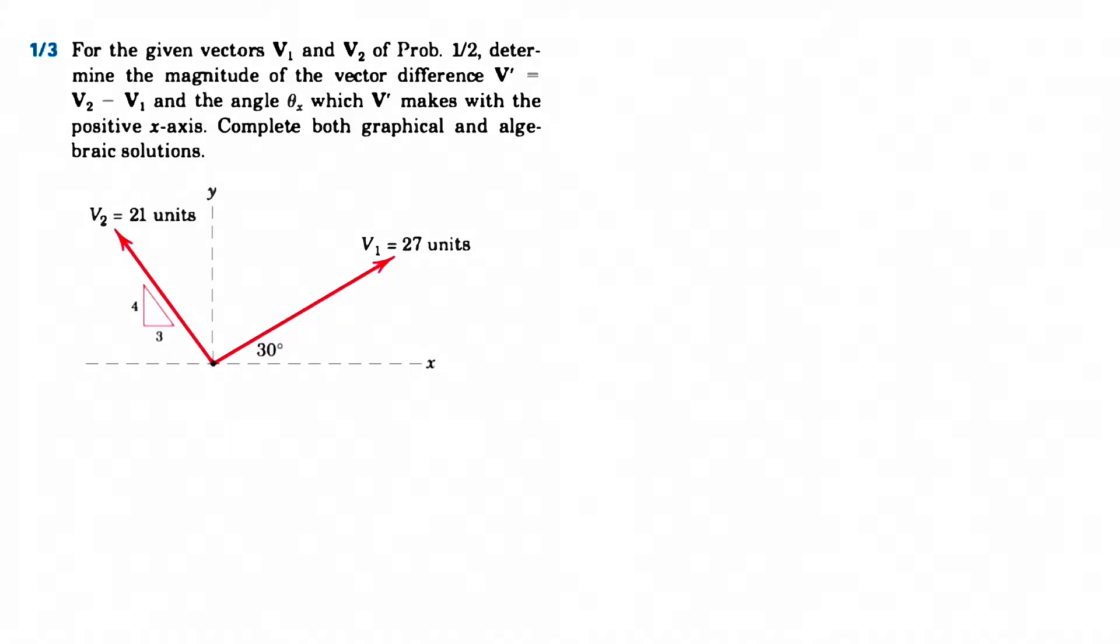In this one, for the given vectors that we had in the previous question, V1 and V2, we need to determine the magnitude of the vector difference, which is shown with V prime.